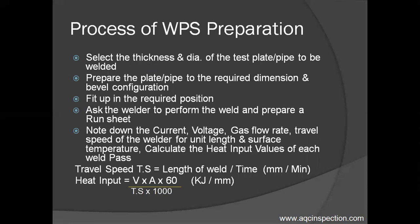The process of WPS preparation: Select the thickness and diameter of the test plate or pipe to be welded. Prepare the plate or pipe to the required dimension and bevel configuration. Fit up in the required position. Ask the welder to perform the weld and prepare a run sheet. Note down the current, voltage, gas flow rate, travel speed, and surface temperature. Calculate the heat input values of each weld pass.